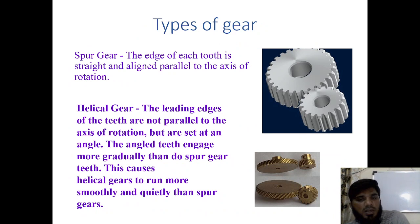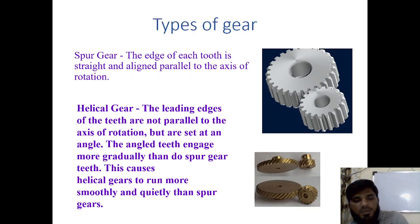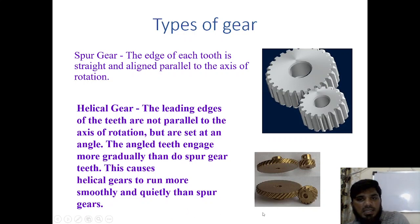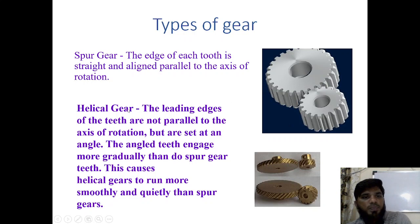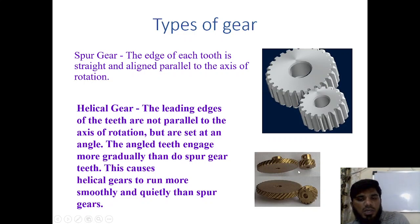Generally we have different types of gear. The most common type is the spur gear, which you may have studied in machine design or kinematics of machinery, covering gear terminologies. In a spur gear, the teeth are aligned parallel to the axis. Helical gears have teeth that are not parallel to the axis but are aligned at some angle.